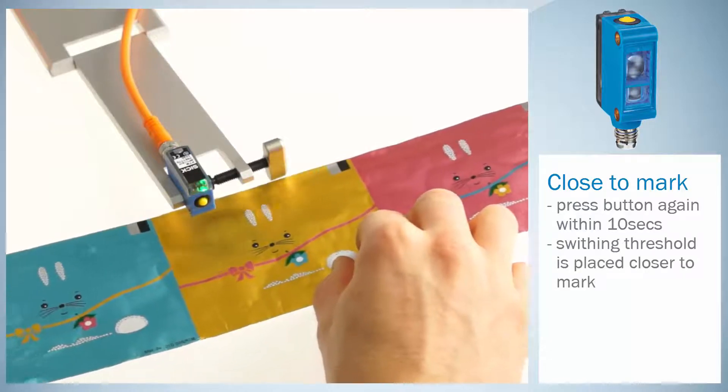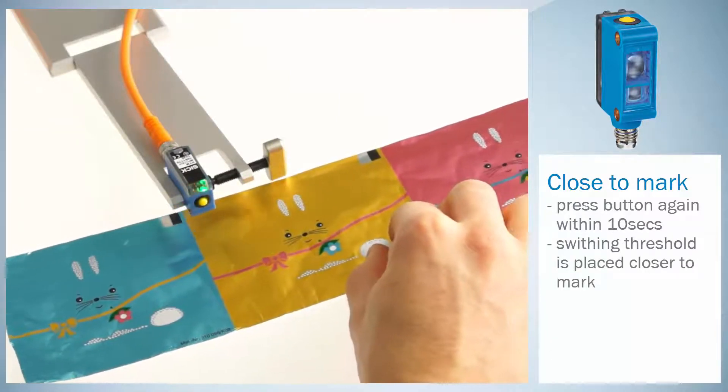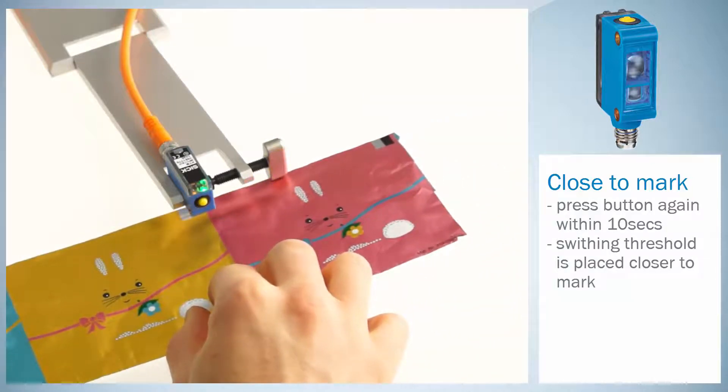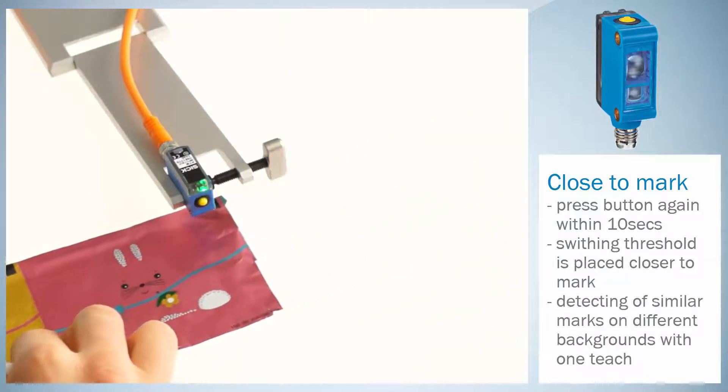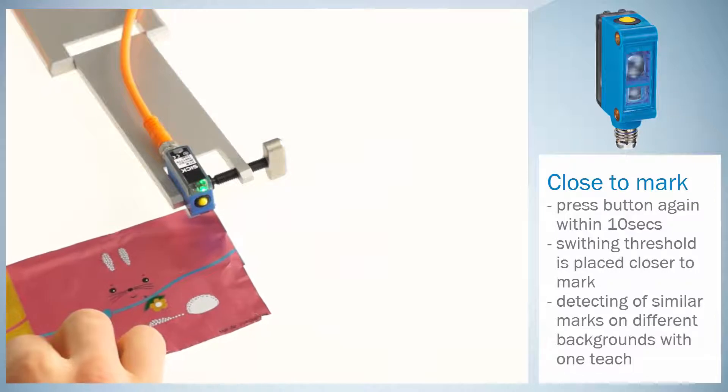This means that the switching threshold is placed closer to the mark instead of in the middle between mark and background remission. This feature allows detecting similar marks on different colored backgrounds with one teach.